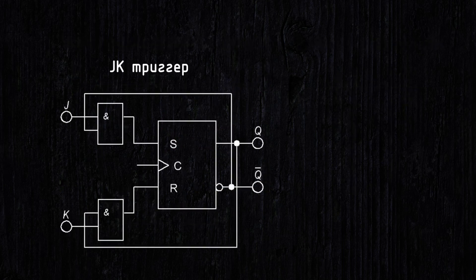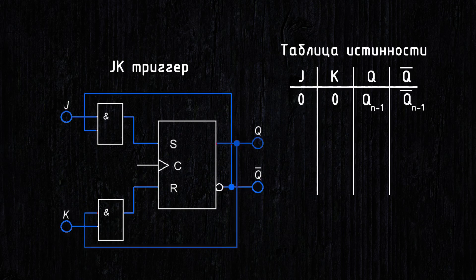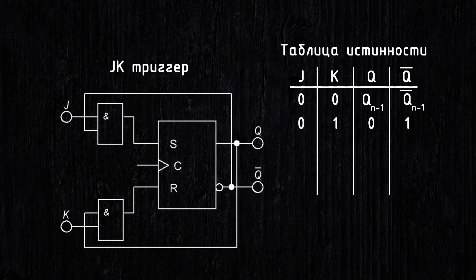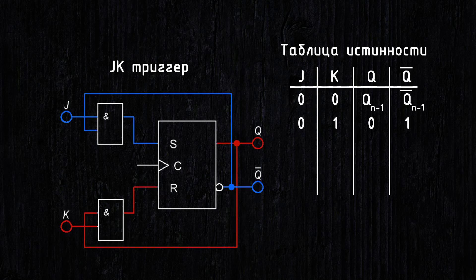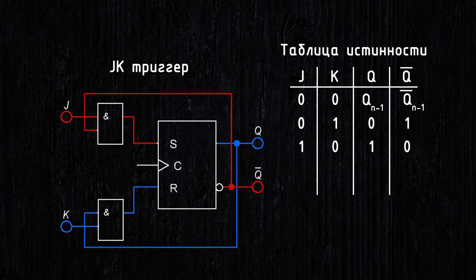A JK flip-flop is essentially the same as an RS flip-flop, with its input signals fed through AND gates. Due to the introduction of feedback, the forbidden combination of the RS flip-flop in the JK flip-flop performs the function of inverting the state. In the truth table: 0 and 0 give hold mode, 0 and 1 give reset mode, and the lower AND gate will open to pass the 1. But when the state of the output Q changes, a 0 will appear there and the flip-flop will switch to hold mode. 1 and 0 gives the same scenario when setting the flip-flop; the flip-flop changes its state, after which it switches to hold mode.